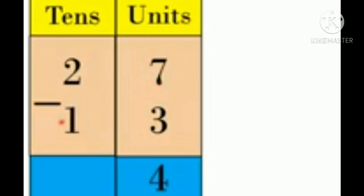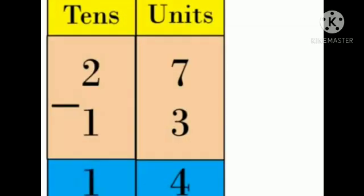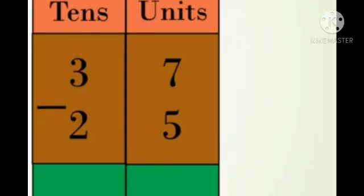Now, 7 minus 3 is equal to how much? Yes, 7 minus 3 is equal to 4. Now in the tens column, 2 minus 1 is equal to how much? Yes, 2 minus 1 is equal to 1. So 27 minus 13 is equal to 14.